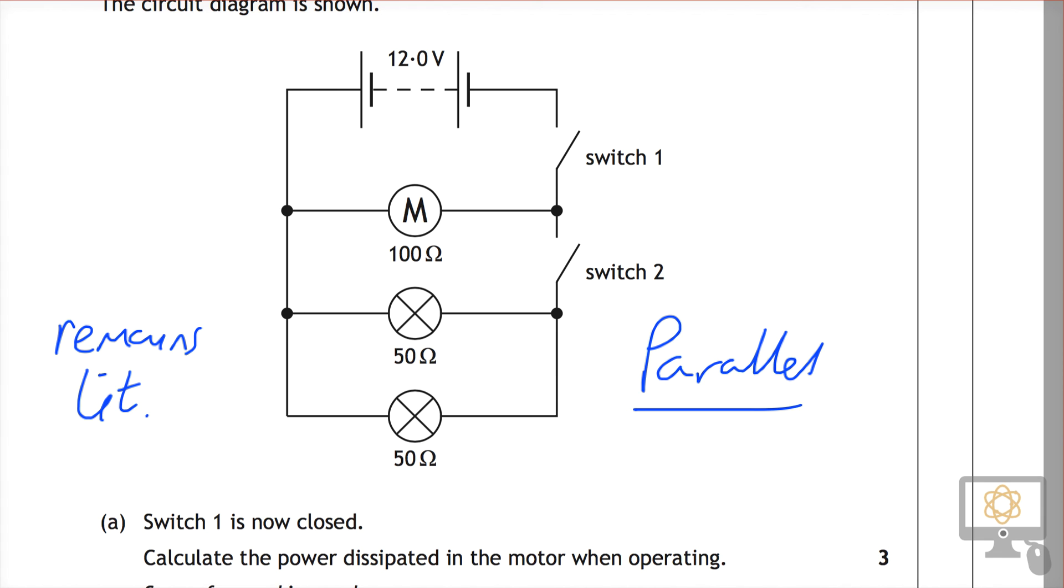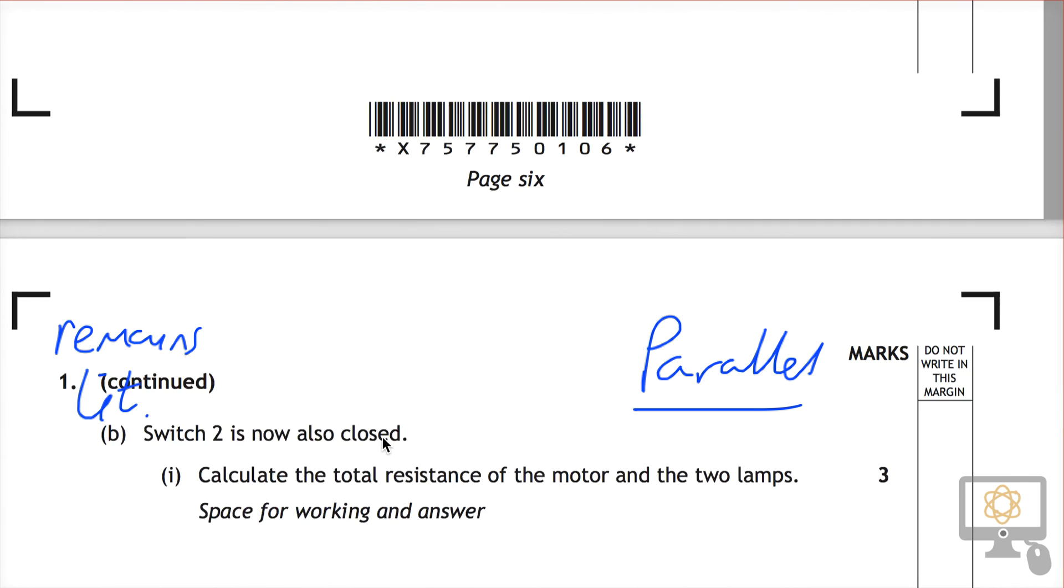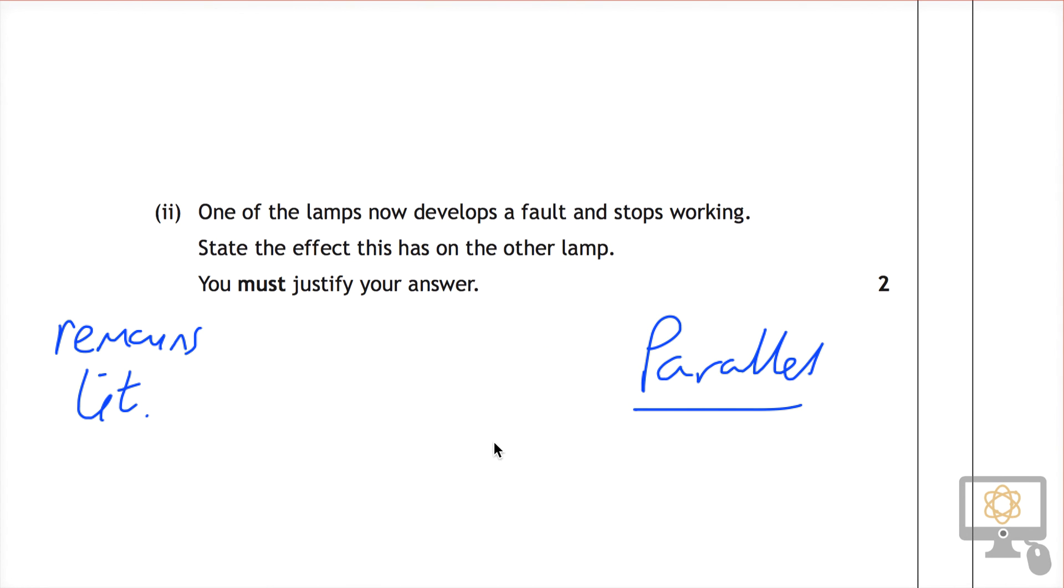But if you get the effect correct, but you don't write any justification whatsoever, you will not get the mark for your correct statement. So that's the key thing to remember there, because when we look back here, it says you must justify your answer. No justification, regardless of correct or not, means you get no marks whatsoever.